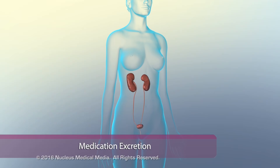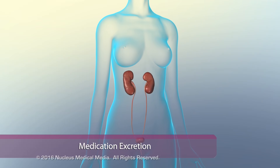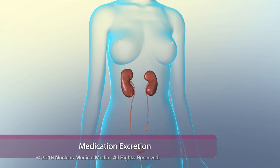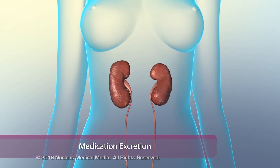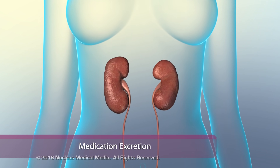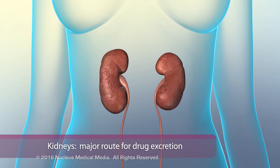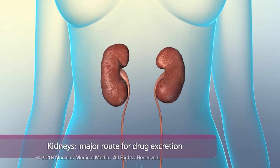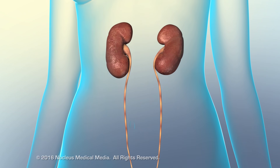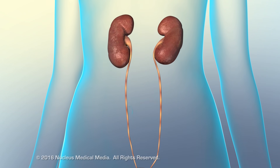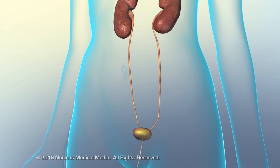The body filters drugs from the bloodstream and eliminates them in a multi-step process called medication excretion. The kidneys are the major route for drug elimination. Most drugs exit the body either unchanged or as drug metabolites in urine.